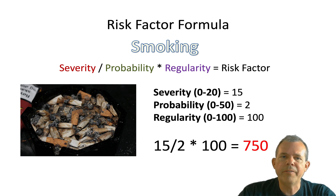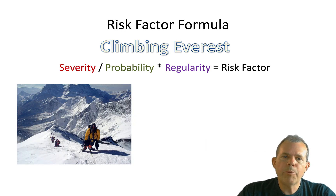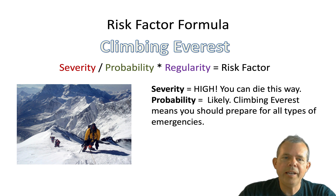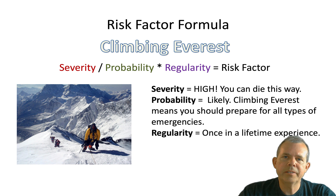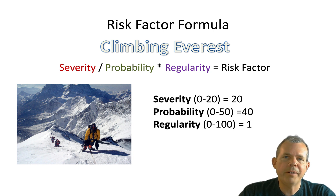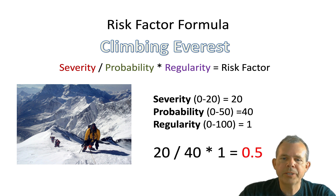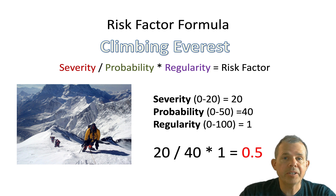The risk formula gives us 750 for smoking. Your estimates may be slightly different, but you can see that a ladder is less risky than smoking. How about climbing Mount Everest? Severity is high because you can die. Probability is likely — the percentage of people who die up there seems to be quite high. And regularity is probably once — how often do you go to Mount Everest? So with numbers of 20, 40, and 1, the actual risk factor of Everest is 0.5. That's assuming you only go once in your lifetime. If you're a Sherpa climbing every day, this will obviously be a different number.